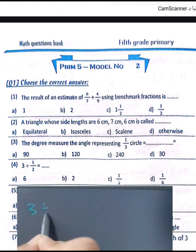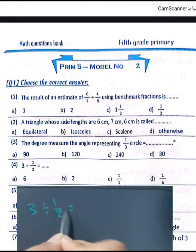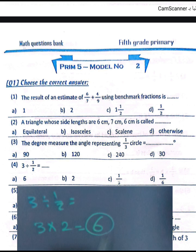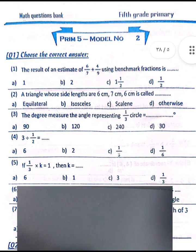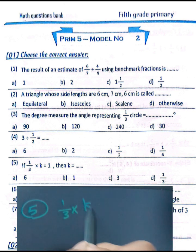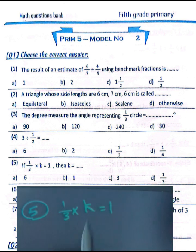Question number four: three divided by one half. Write three and convert from division to multiplication using the reciprocal of one half, which is two. Two times three equals six.